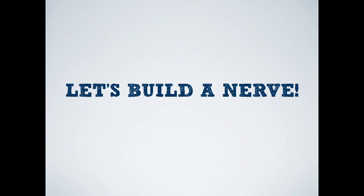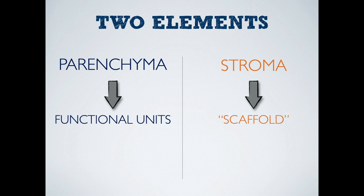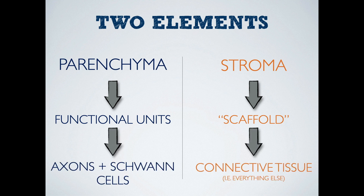So let's build the nerve together. I want you to think of the nerve as being composed of two distinct types of elements. The first is the parenchyma and the other is the stroma. The parenchymal tissue comprises the functional units of nerve tissue, while the stroma is the scaffold that holds it together. To get more precise, those functional units are axons and Schwann cells, while the stroma is all the remaining connective tissue.